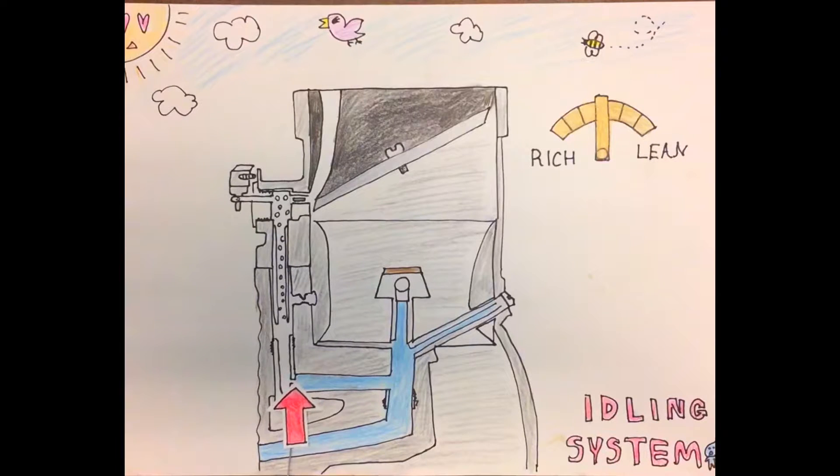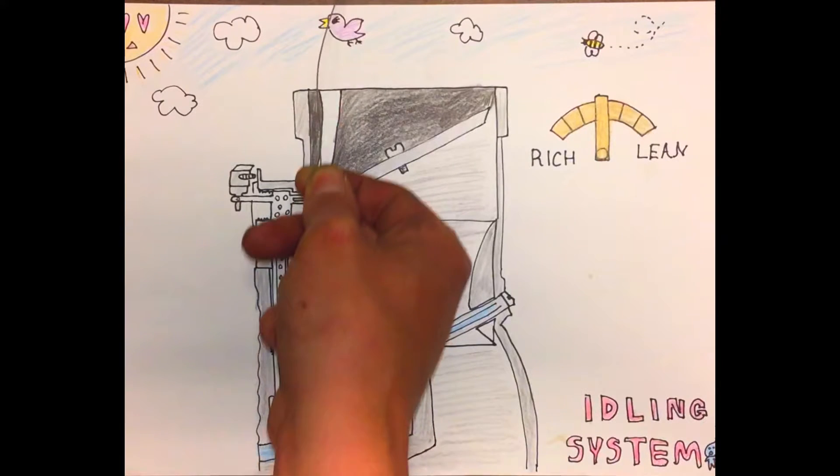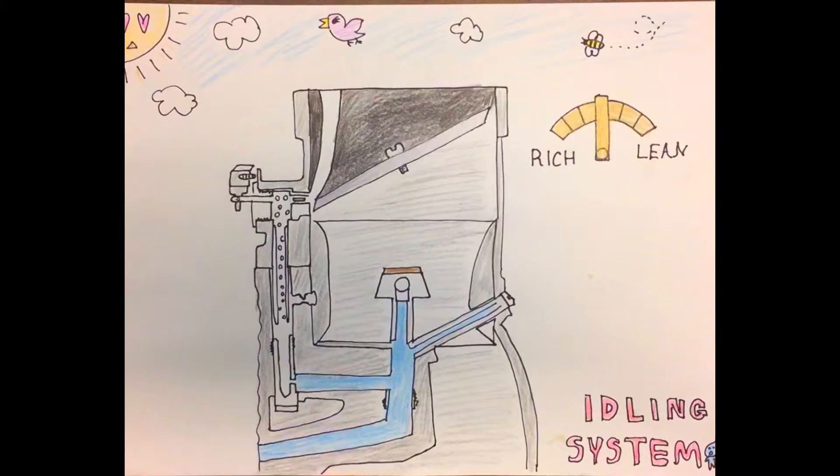An idle metering jet and the emulsion tube regulates the amount of fuel that can be drawn from the main discharge system and an idle air bleed emulsifies the fuel. The throttle plates create a venturi at the discharge ports and this creates a low pressure that draws the fuel from the idle discharge ports and enables the fuel to be discharged into the air stream.